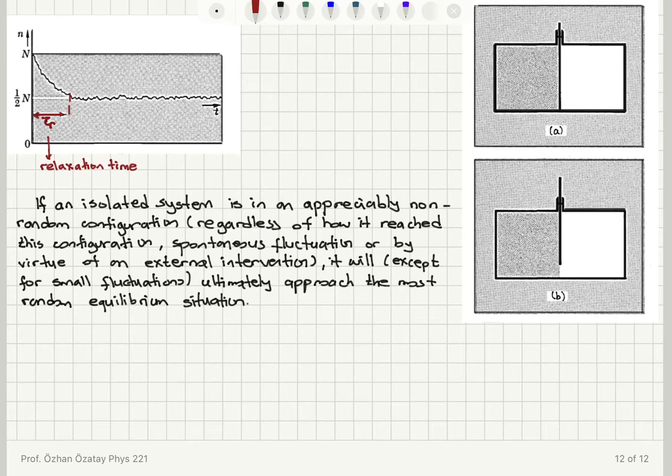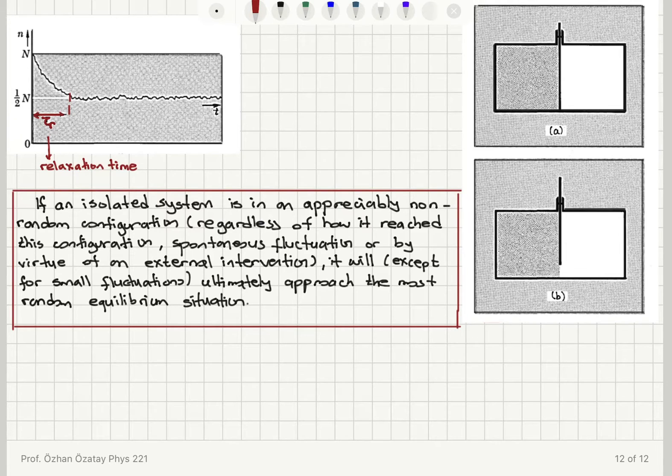So we're saying a few things here. One, the equilibrium situation for the system is the most random or most disordered situation. And if you prepare the system in a non-equilibrium configuration, which is ordered, non-random configuration, non-uniform configuration, regardless of how you prepared this configuration, whether it's a spontaneous fluctuation that is rarely occurring throughout the lifetime of the system, or by virtue of an external intervention, the system will always relax to its equilibrium random, disordered, uniform configuration.